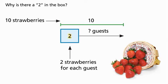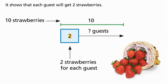Why is there a two in the box? It shows that each guest will get two strawberries.